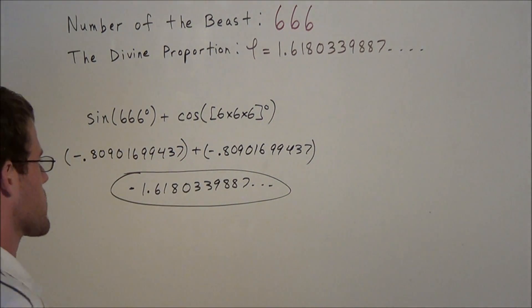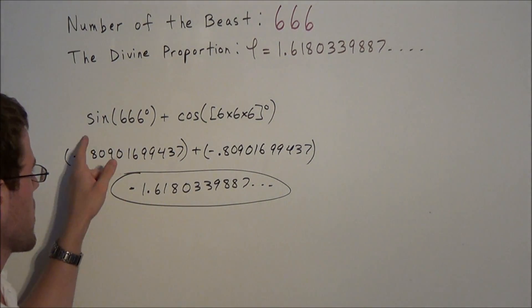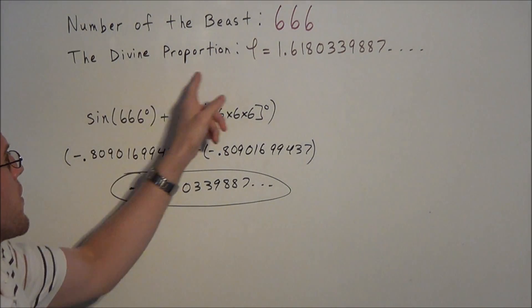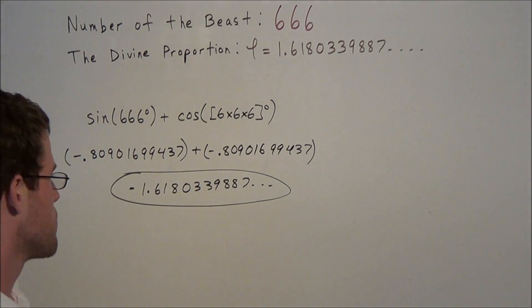So it's just a really interesting relationship that exists when we use the sine and cosine functions, but using your calculator, we can generate the inverse of the divine proportion using the number of the beast.